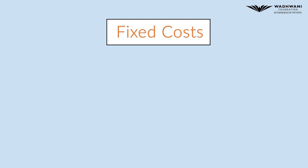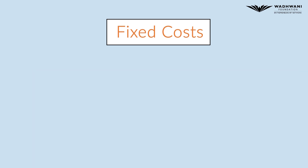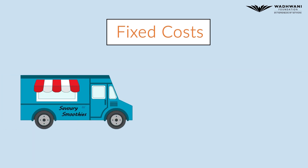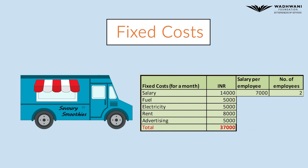Fixed costs are the expenses incurred regularly irrespective of how much you sell or how much you produce. Fixed costs are usually calculated for a month. For the smoothie business, your fixed costs will be fuel, salaries, and electricity.